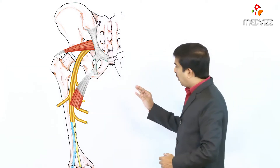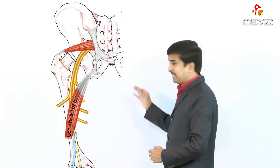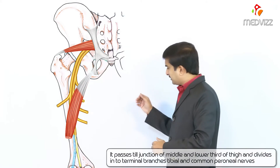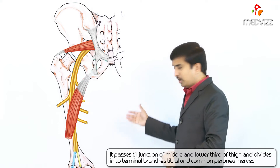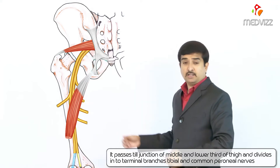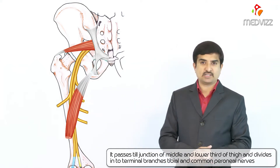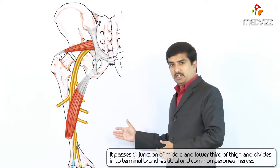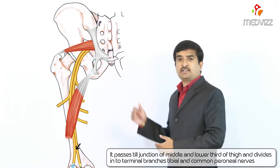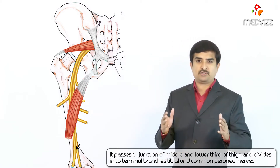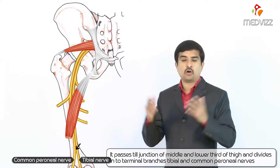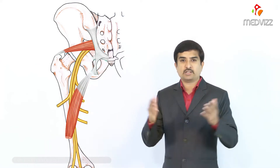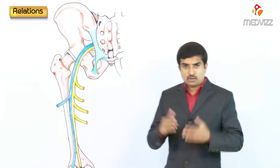In the posterior aspect of the thigh, the nerve is crossed by the long head of the biceps femoris and passes to the junction of the middle and lower third of the thigh, near the popliteal fossa, where the nerve divides into its two terminal branches: the tibial and the common peroneal components.